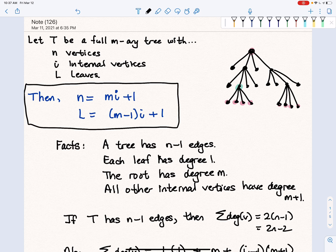We're going to say T is a full M-ary tree. N is the number of vertices, I is the number of internal vertices, and L is the number of leaves.